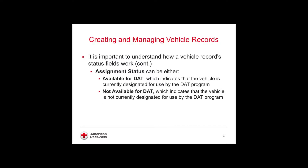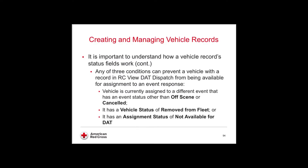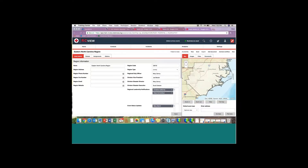The assignment status can either be 'available for DAT,' meaning it's available to the DAT program, or 'not available for DAT.' Any of three conditions can prevent a vehicle in RCVU.dispatch from being available: it might be assigned to another event with a status other than off-scene or canceled, it might have a vehicle status of removed from fleet, or it has an assignment status of not available for DAT.